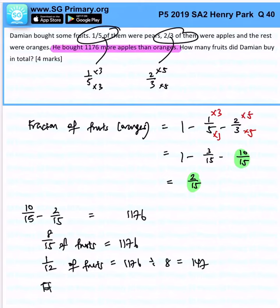So total fruits would simply be 147 times 12. And that will give us... oh sorry, I made a mistake, times 15. Okay, that should give us 2,205.